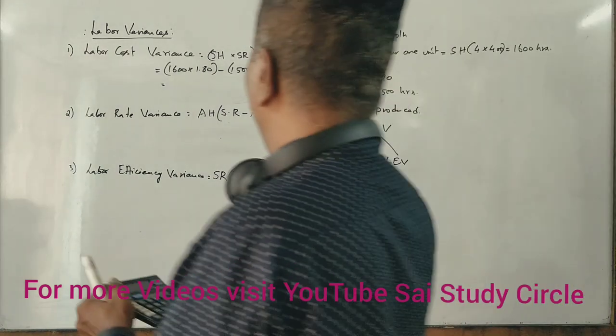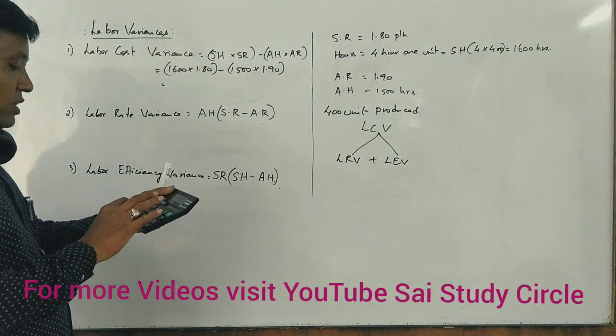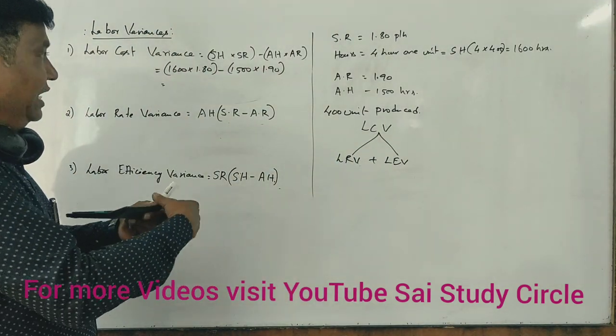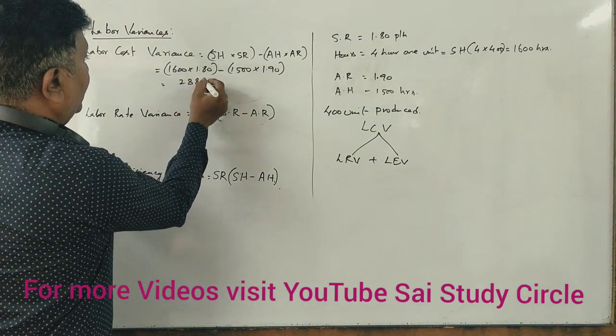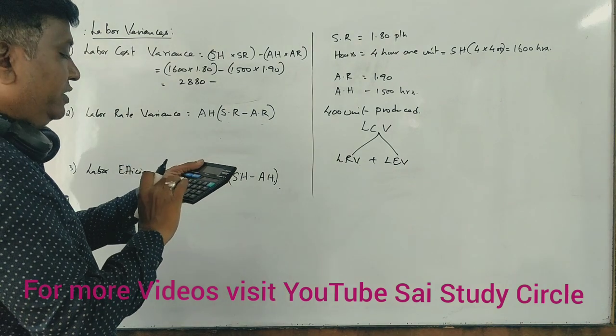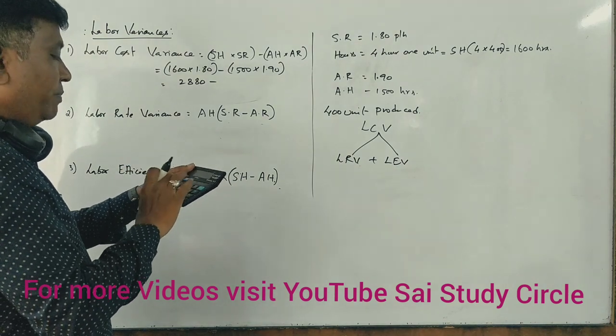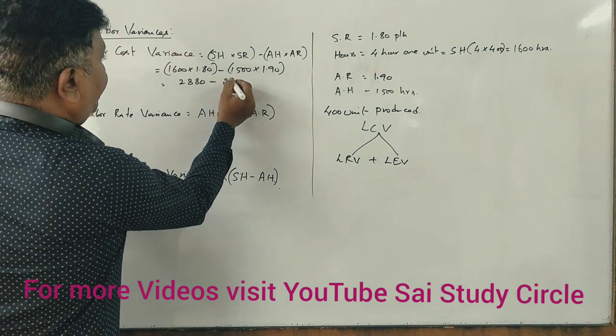This is 1,600 times 1.80, which is 2,880, minus 1,500 times 1.90, which is 2,850.